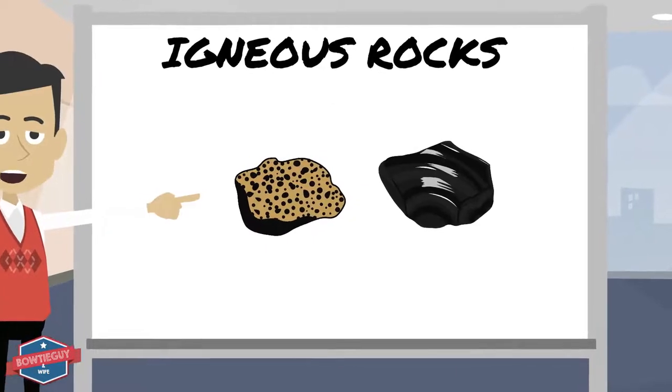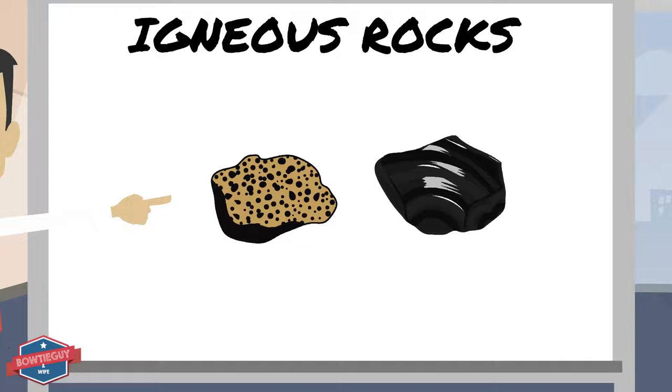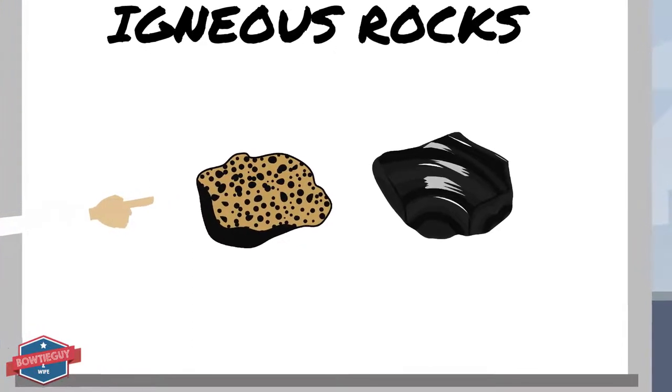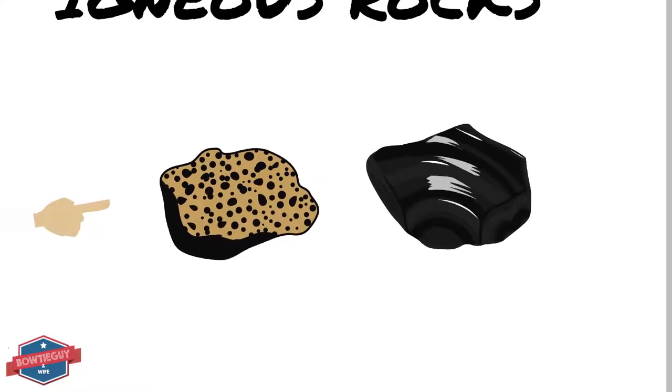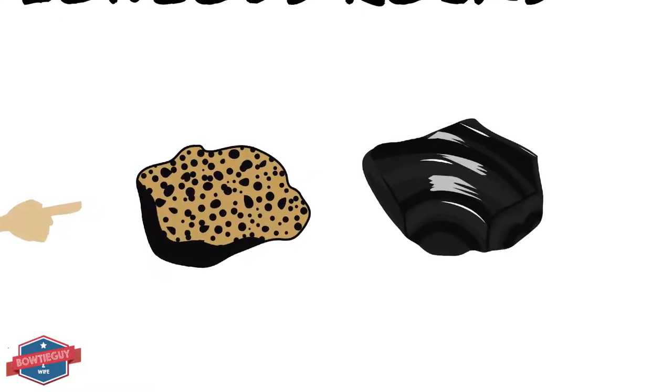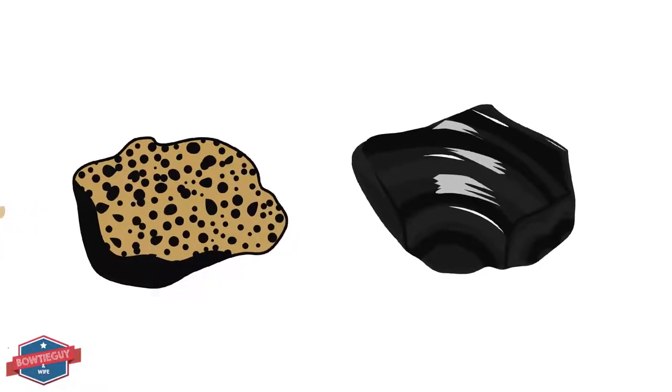Take a look at this pumice and obsidian rock. The pumice contains tiny holes that are caused by gases escaping from the lava as it cools. Obsidian also forms from lava. The lava cools so quickly that the rock looks like black glass. When obsidian breaks, sharp edges form.